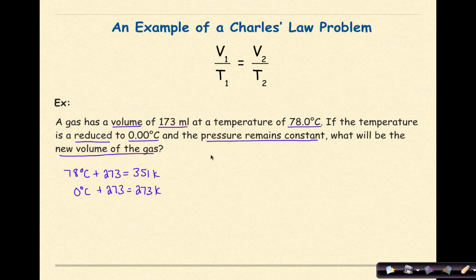The next step is to write my formula. V1 over T1 is equal to V2 over T2. My V1 for this situation is 173 milliliters. So 173 milliliters divided by 78 degrees Celsius, which we know is now 351 Kelvin.